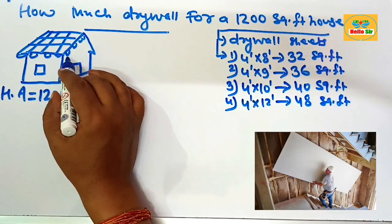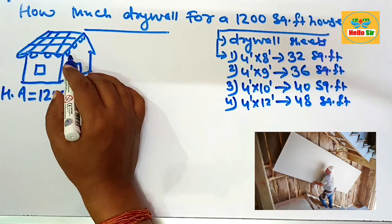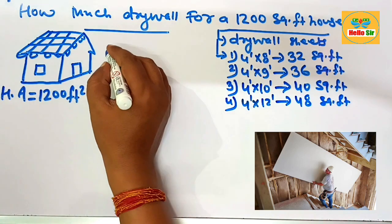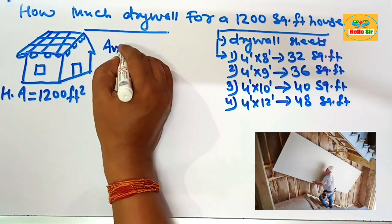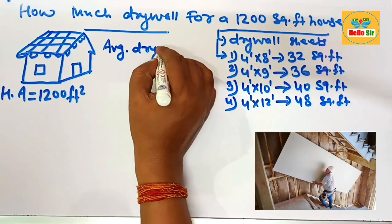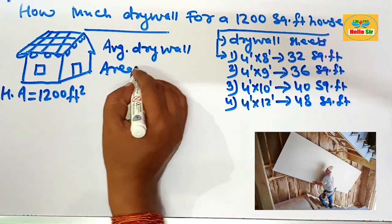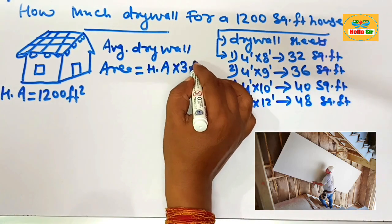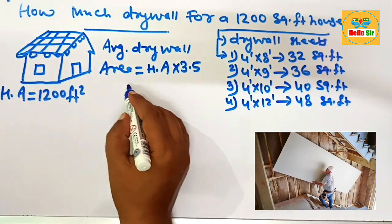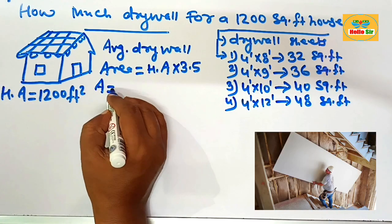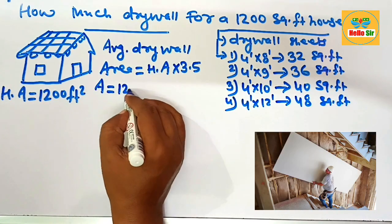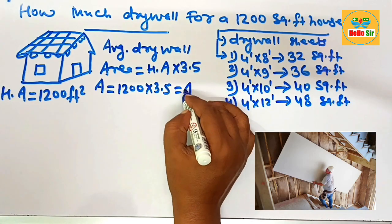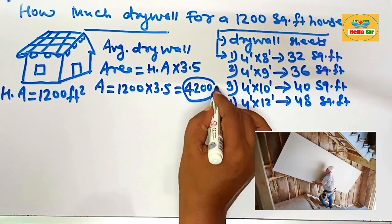This house has many room options, but here we use the thumb rule factor. The formula to calculate the average drywall area is: house area multiplied by the common factor of 3.5. So the total drywall area is 1200 multiplied by 3.5, which equals about 4200 square feet of drywall area required.